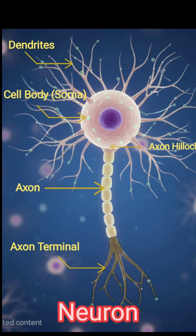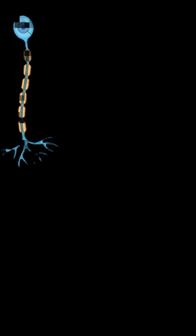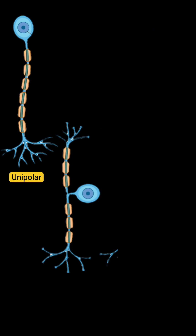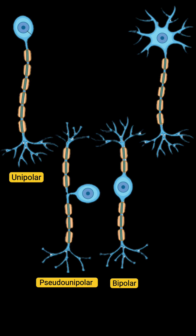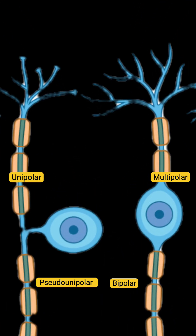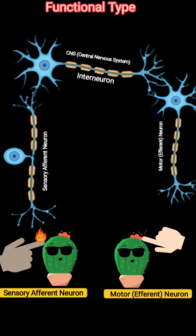Quick recap: The neuron is the functional unit of the nervous system. Its structure includes dendrites, the cell body, and the axon. Structural types are unipolar, pseudo-unipolar, bipolar, and multipolar. Functional types are sensory, interneuron, and motor.